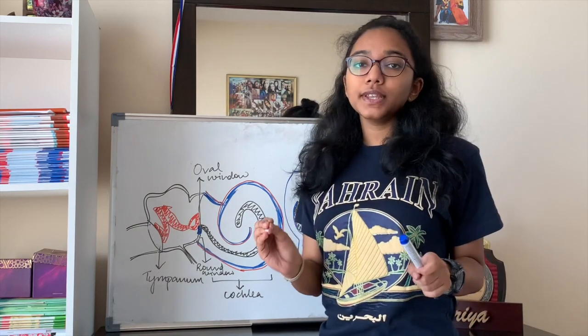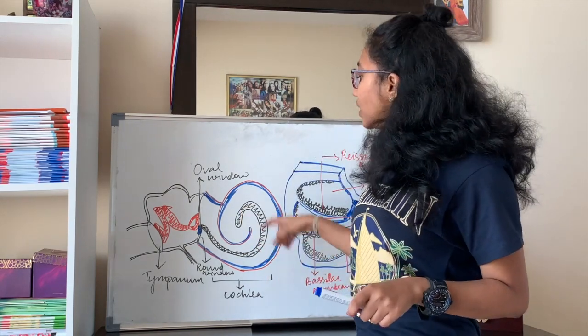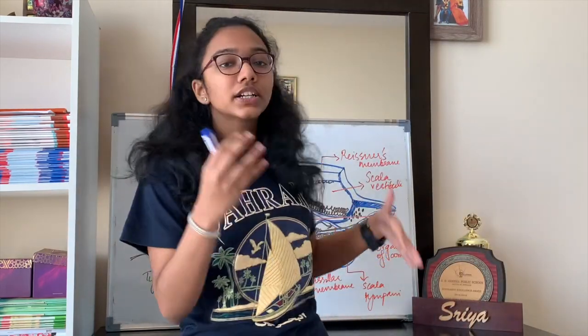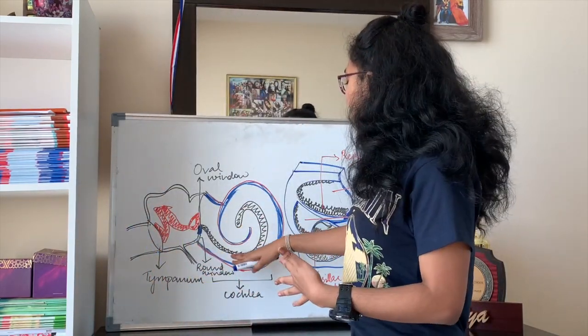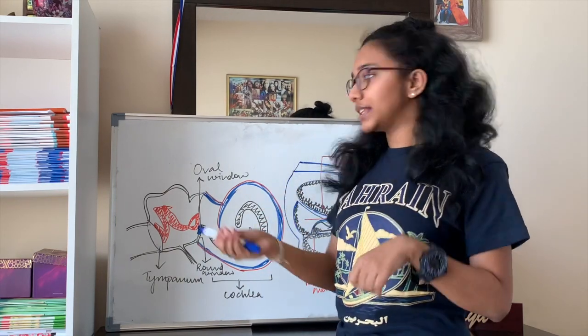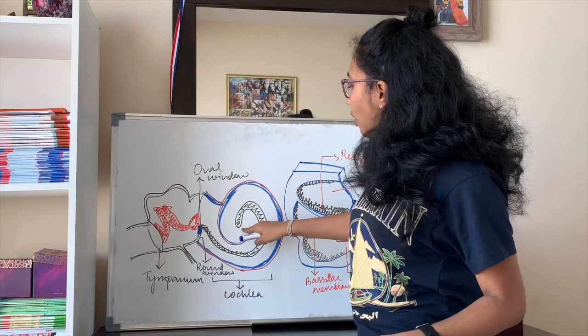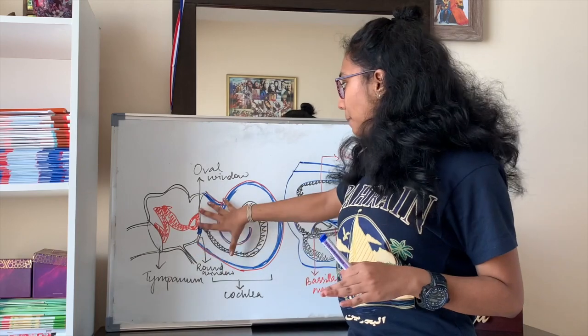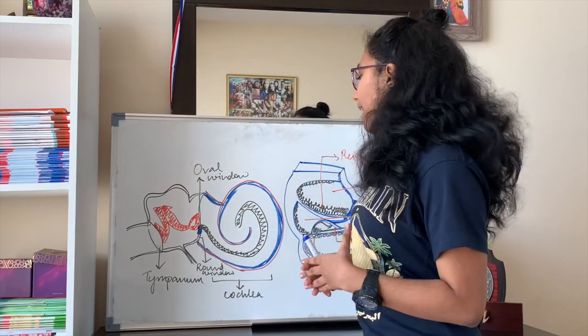Different frequencies of sound are interpreted at different areas along the cochlea — different regions of the basilar membrane and organ of Corti respond to different frequencies. The tip of the cochlea responds to lower frequencies, while the base responds to higher frequencies. That covers the mechanism of hearing and how it is interpreted by our brain. Thank you for watching — please let me know if you have any video suggestions.